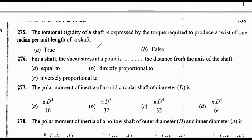The torsional rigidity of a shaft is expressed by the torque required to produce a twist of one radian per unit length of a shaft — true or false. The answer is true. For a shaft, the shear stress at a point is dash the distance from the axis of the shaft: equal to, directly proportional to, or inversely proportional to. The correct answer is option B: directly proportional to.